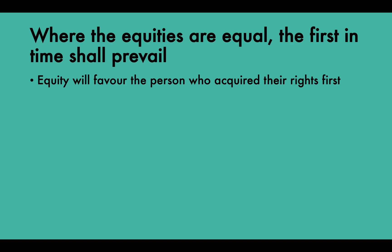Where the equities are equal, the first in time shall prevail. Where two claimants have equally strong cases, equity will favour the person who acquired their rights first. For example, if two equitable mortgagees — two banks — each seek to enforce their security rights under a mortgage ahead of the other, the court will give priority to the person who created their mortgage first.